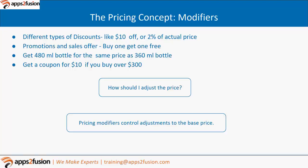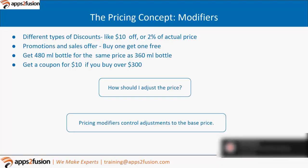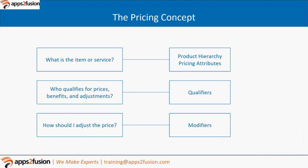Qualifier and modifier are very basic but very important concepts of pricing — they go together. We will be using these terms throughout the training. As a high-level summary: product hierarchy and pricing attribute define what the item or service is; qualifier tells us who qualifies for price benefits and adjustments; and modifier defines how the price should be adjusted. These three things are used by the pricing engine itself.